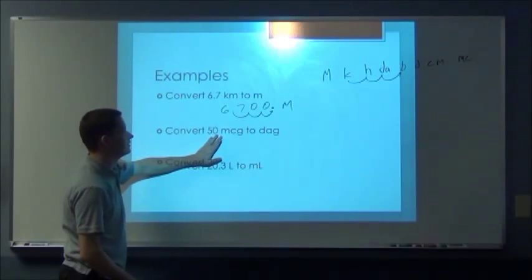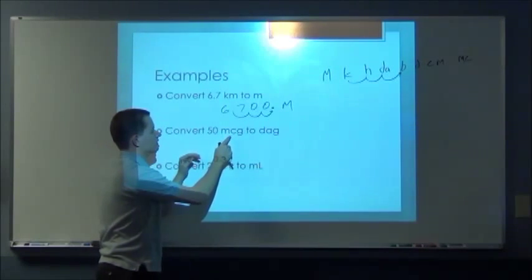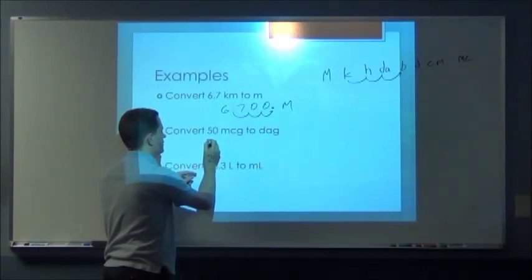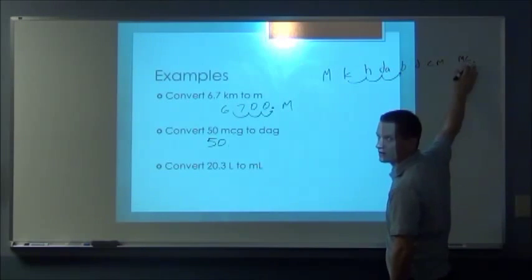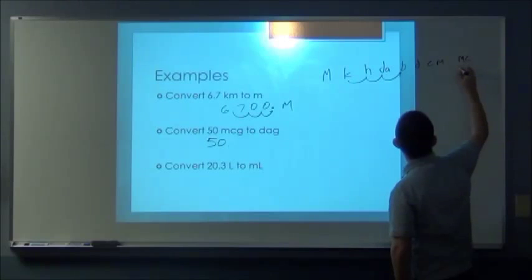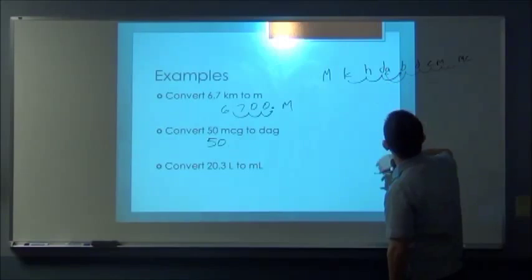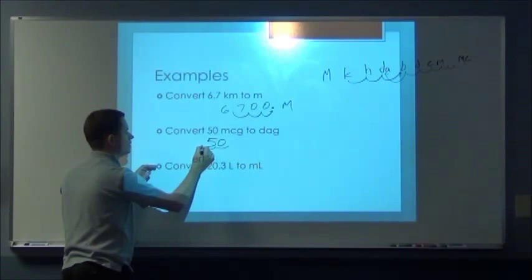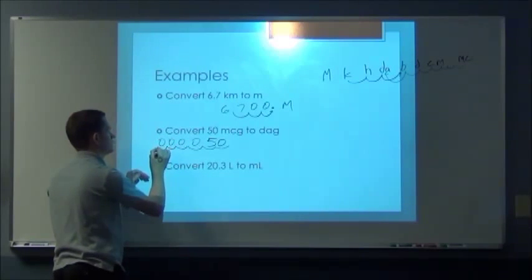Alright, so this one you're converting from micro to deco. And remember you're adjusting the decimal. So you're starting with micro and you're going all the way over here, so that's 1, 2, 3, 4, 5, 6, 7 places.